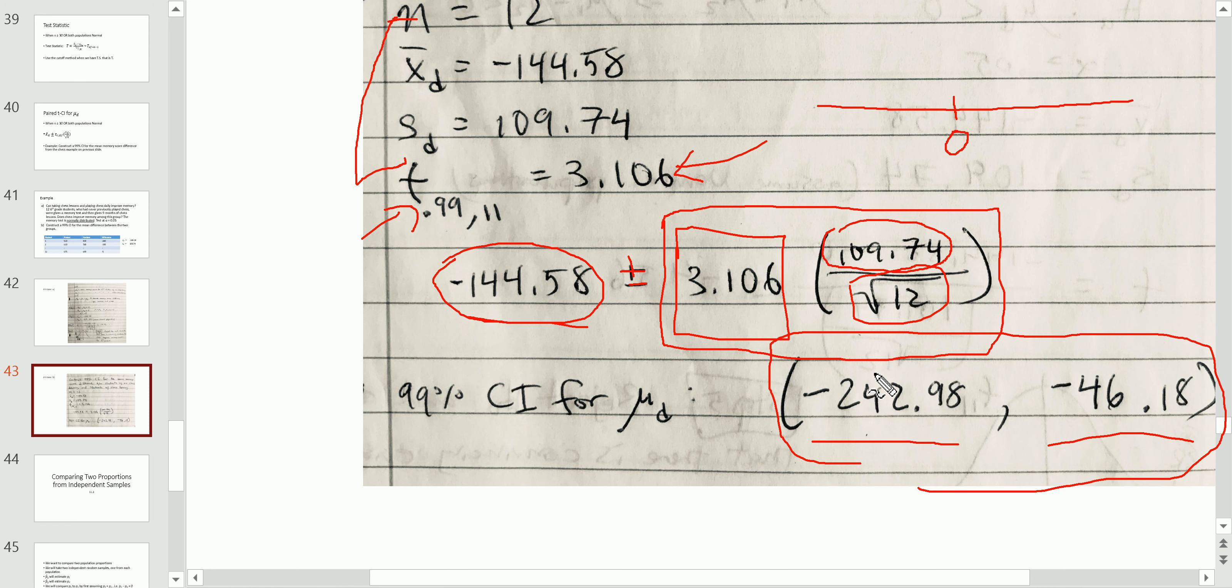If it did contain zero in it, it would be inconclusive. But since zero is not in it, and on top of that, it's completely on this side of zero, that's telling me that at 99% confidence, the difference, the average difference between children who never play chess and children who regularly play chess is a negative number. And if you remember the order that I subtracted, the pre to post, negative meant improvement.